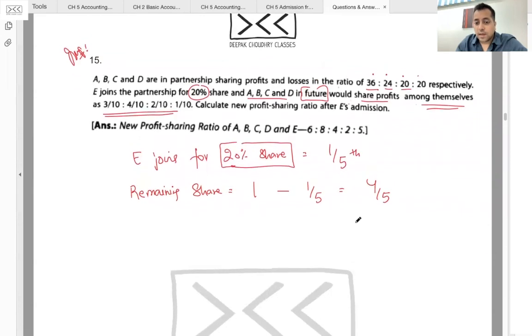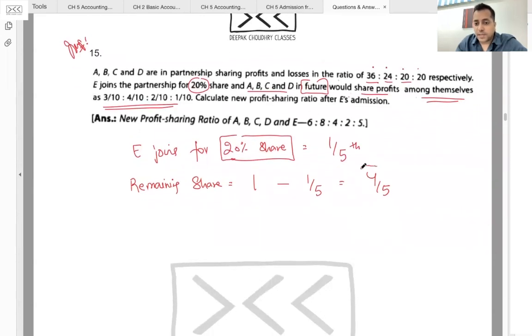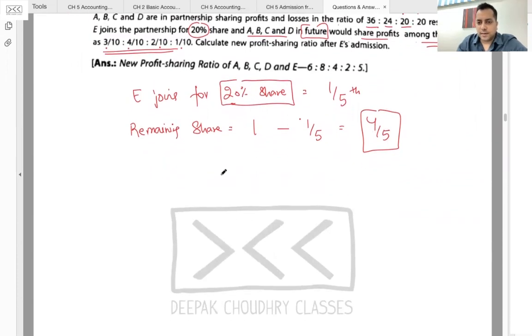Four by five jo bach jayega, woh kaun baatega? A, B, C, D in the ratio 3:4:2:1. So dhyan se dekhna - remaining share four by five, which is 80 percent.